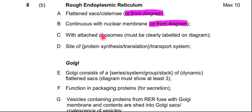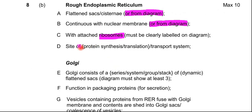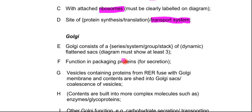Next is the attachment of ribosomes — again, that could be shown on a diagram. You can see the ribosomes as the little brown dots, or the little black ones in the electron microscope image of the rough endoplasmic reticulum. The function mark is that it is the site of protein synthesis, and it's also a transport system — proteins are transported through the flattened sacs throughout the cell.